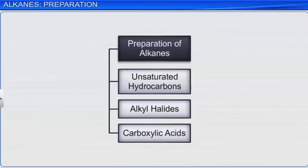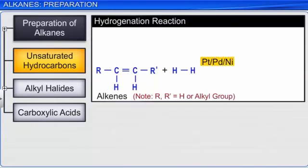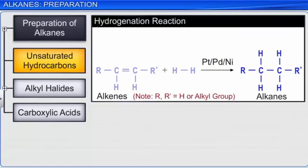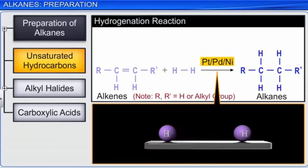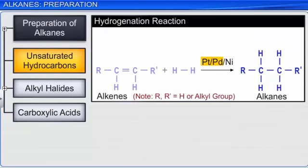Alkanes can be obtained in a laboratory either from unsaturated hydrocarbons, alkyl halides, or carboxylic acids. Unsaturated hydrocarbons like alkenes react with hydrogen in the presence of finely divided catalysts like platinum, palladium, or nickel to form alkanes. As this reaction involves addition of hydrogen, it is called hydrogenation. The surface of these metals absorbs hydrogen gas and activates the hydrogen-hydrogen bond. The reaction using platinum and palladium can be catalyzed at room temperature.